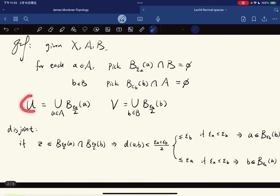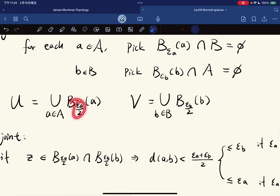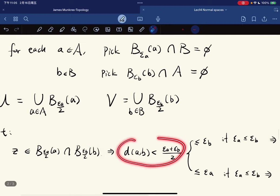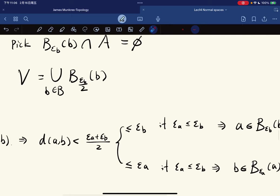Now we let U denote the union of all balls, we just halve their radius. And we show that U and V are disjointed. Because if one of them is in between, then this is by triangle inequality.